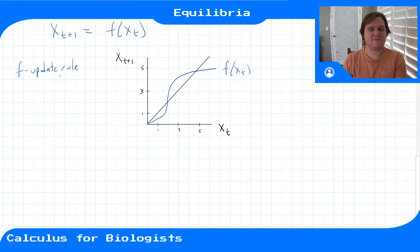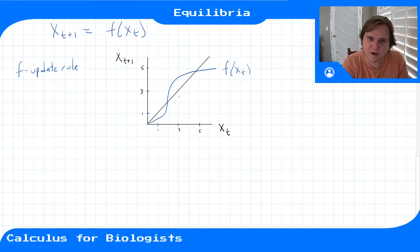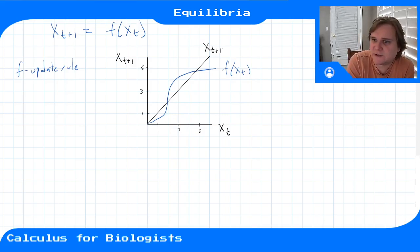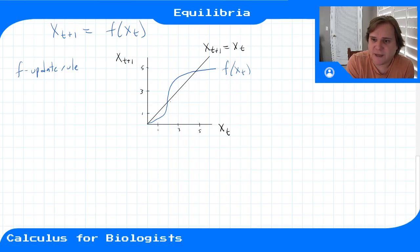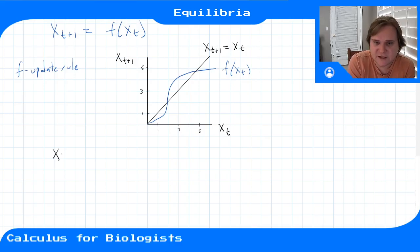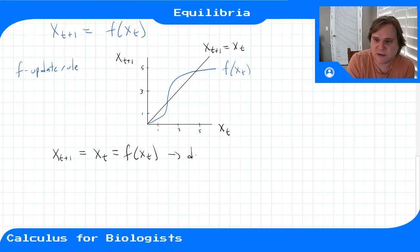When we draw the cobwebbing diagram, we plot our update rule f in the x(t) versus x(t+1) graph, and we also plot the identity line where x(t+1) = x(t). Where these intersect are the equilibrium points — places where f(x) = x(t+1) = x(t). That describes an equilibrium point.